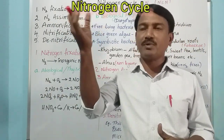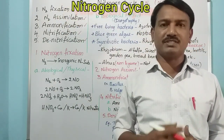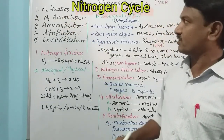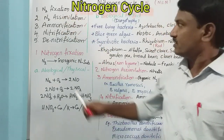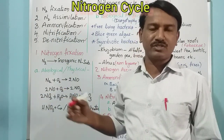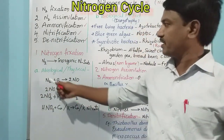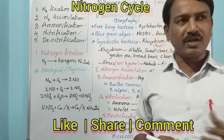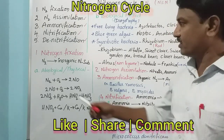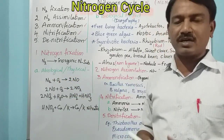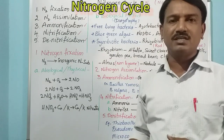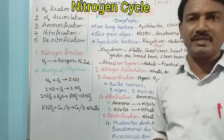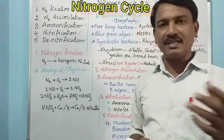The first step is nitrogen fixation — the fixation of nitrogen from the atmosphere into the soil. There are two processes in nitrogen fixation: one is the abiological process and the other is the biological process. The abiological process means without living organisms — how nitrogen is fixed. This is also called the physical process or physical method.